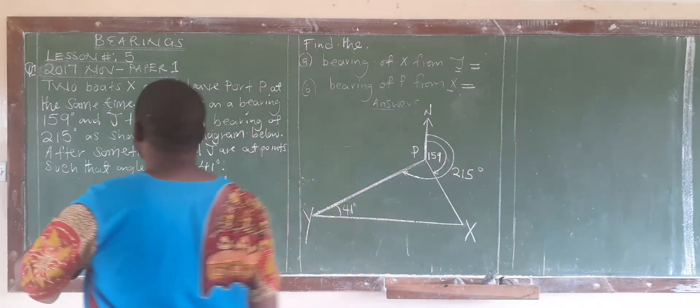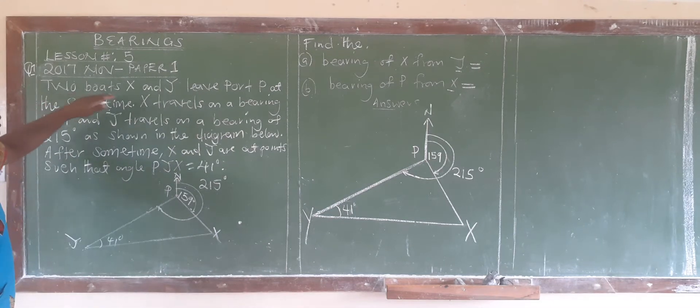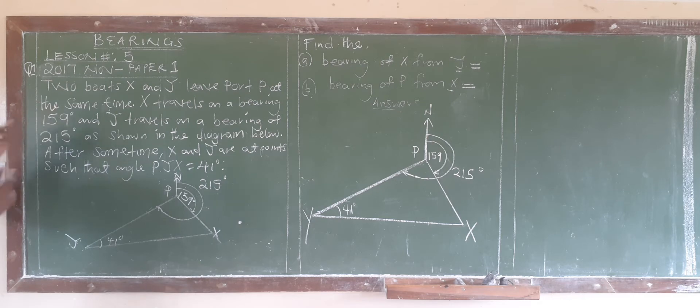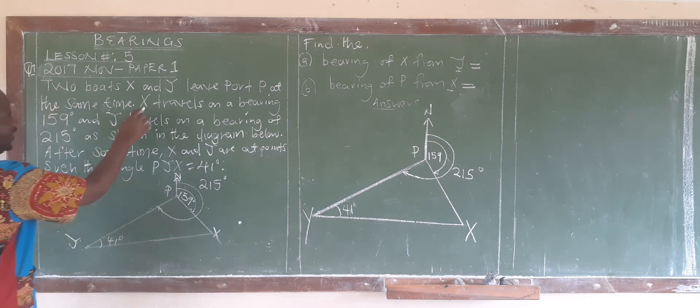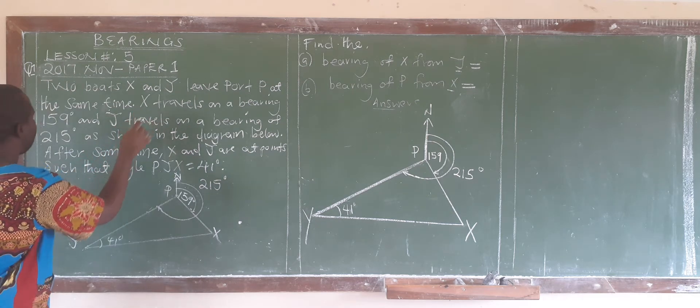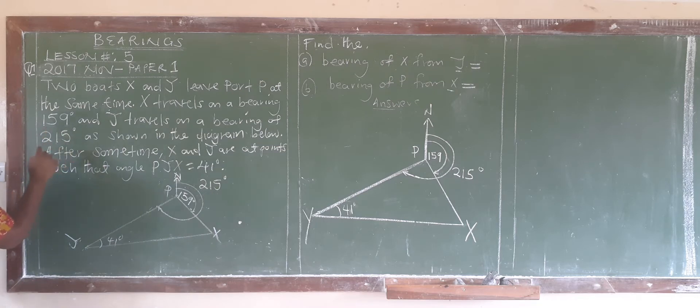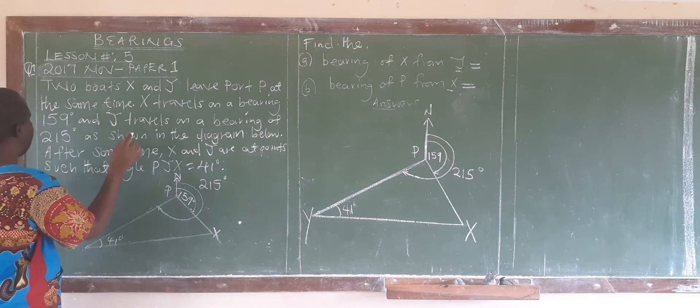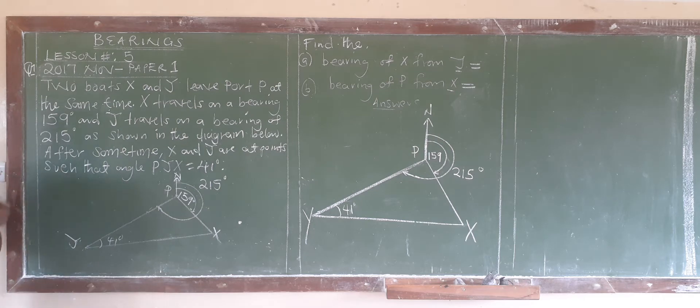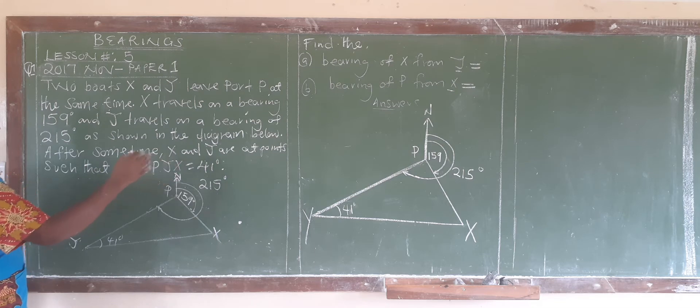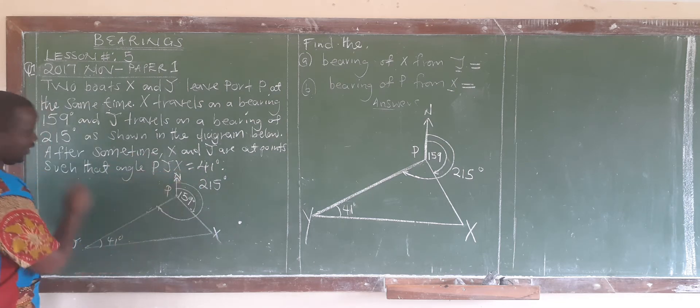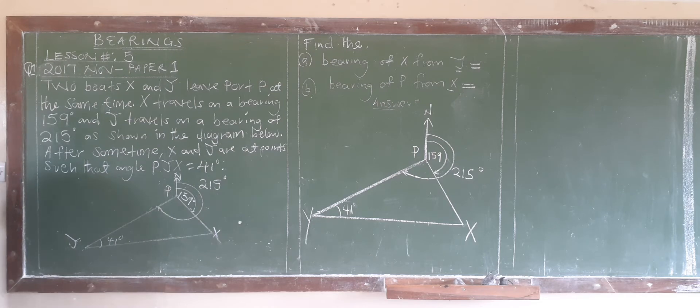So the question reads: two objects X and Y leave point P at the same time. X travels on a bearing of 159 degrees, and Y travels on a bearing of 15 degrees, as shown in the diagram below. After some time, X and Y are at points shown. The angle PYX is 41 degrees. I hope we are able to see the presentation here.